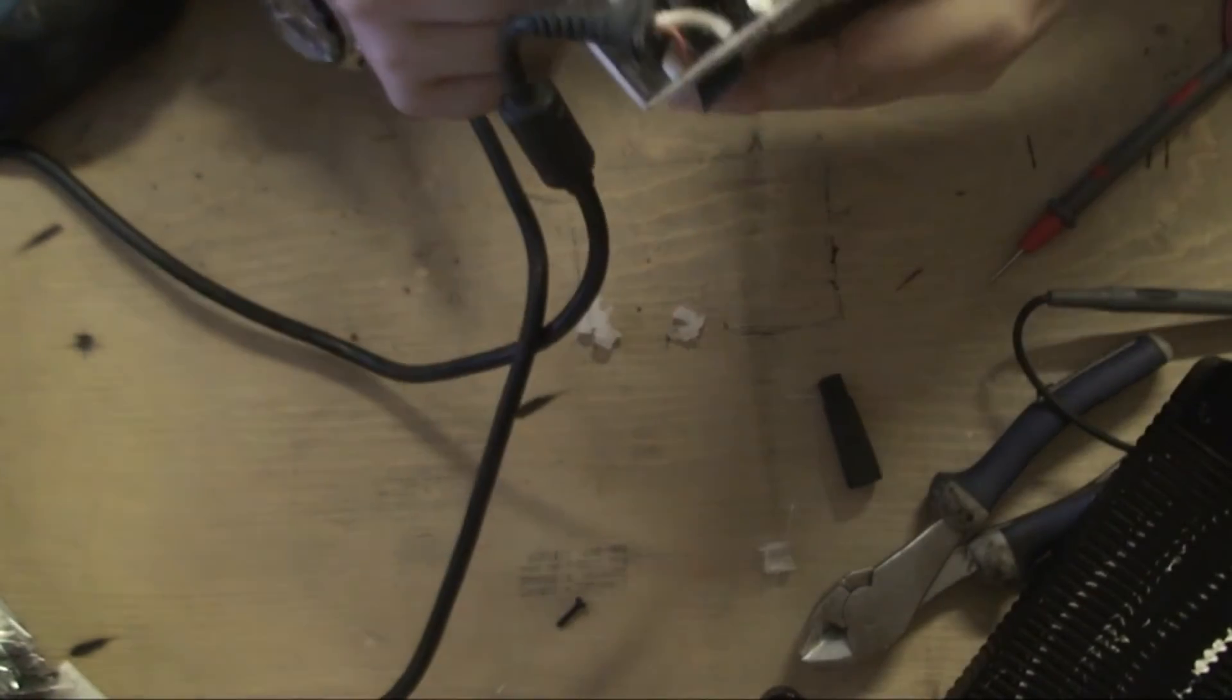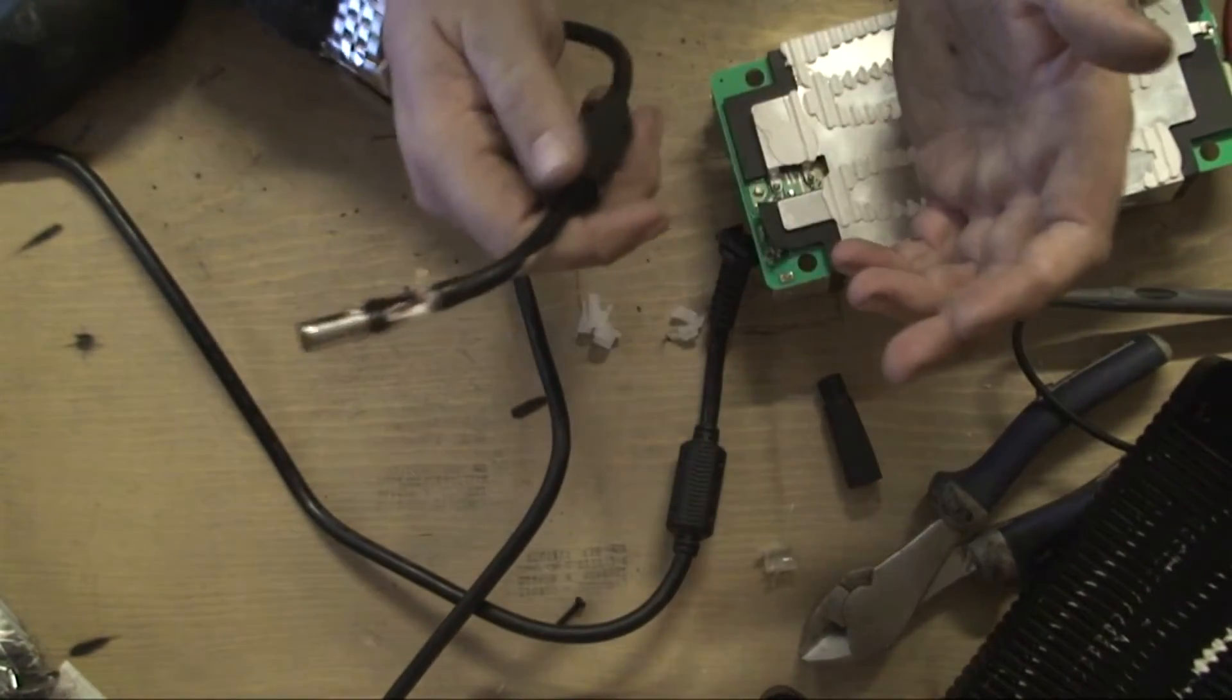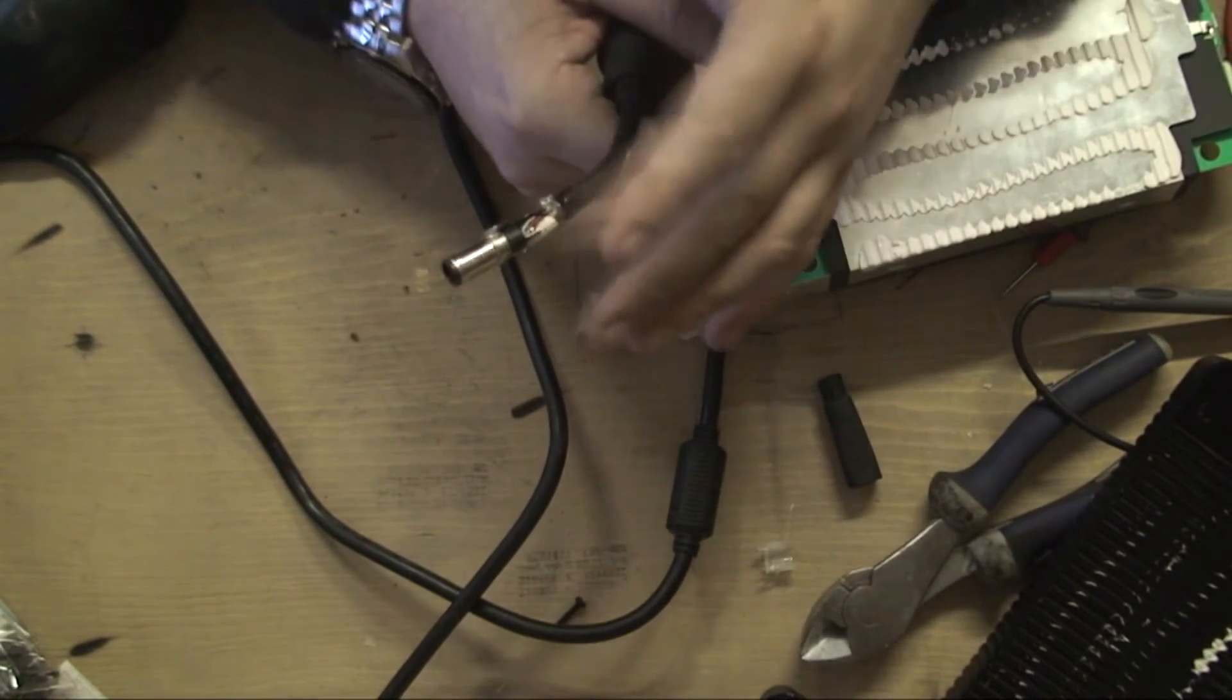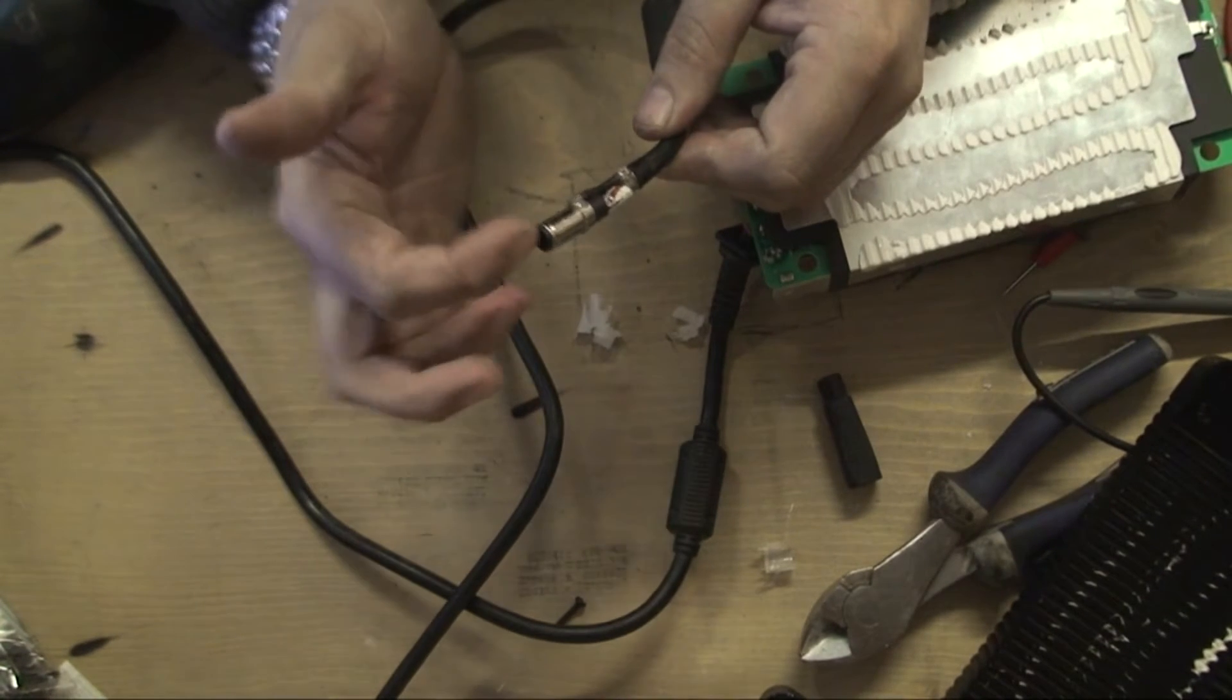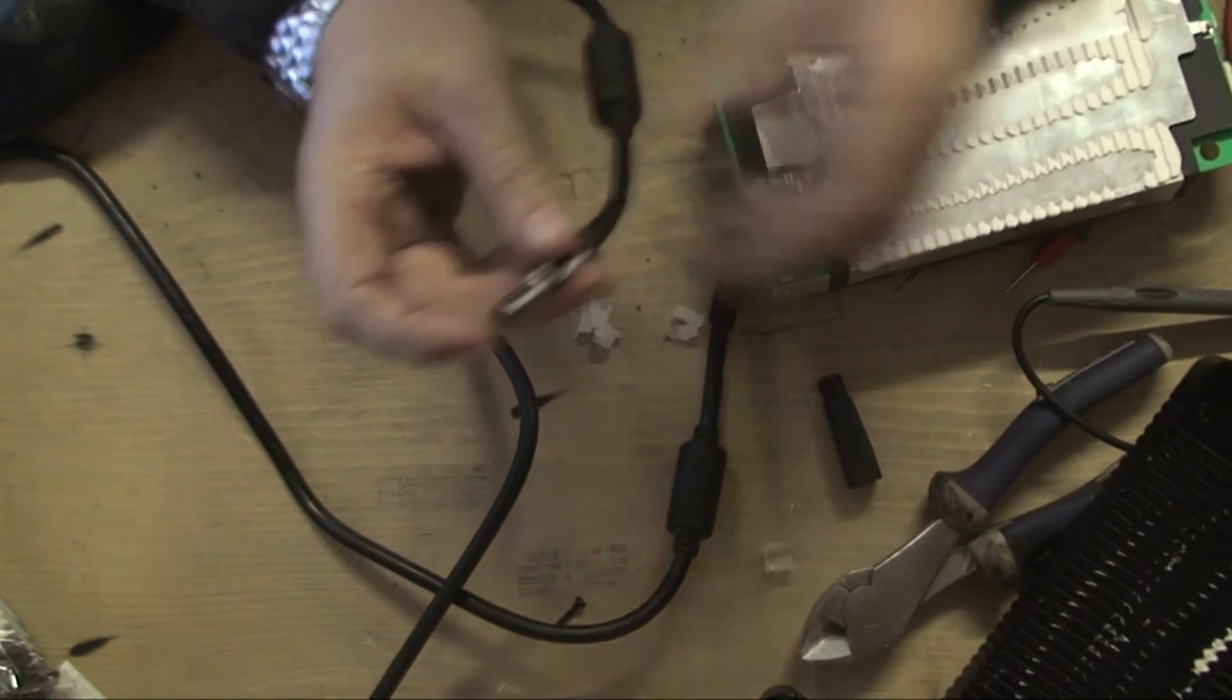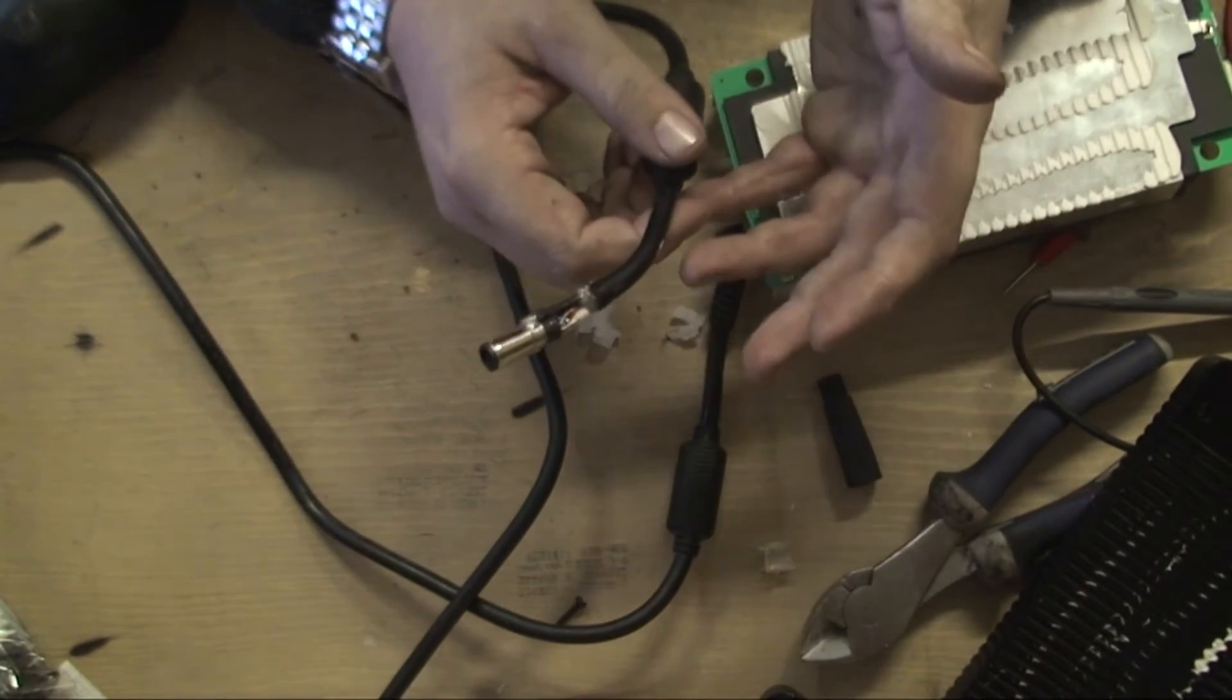Now I've tested the continuity between all three wires, which I maybe should have done first rather than taking this off. But anyway, I'm getting it's okay for the earth and it's okay for the power, but for the middle pin which is this red wire, the data wire, there's no continuity. So I'm guessing it's split somewhere between the cable.